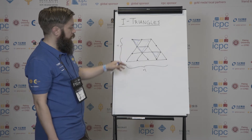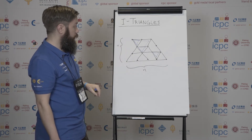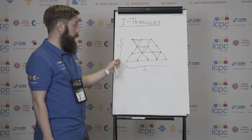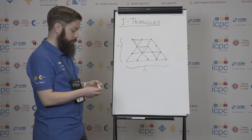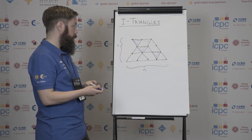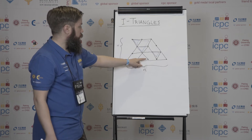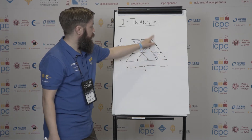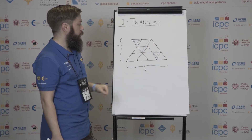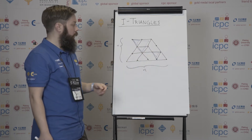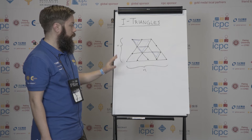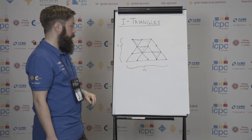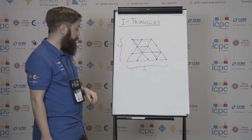Similarly, you can find eight triangles pointing upwards — this one, this one, this big one, and so on and so forth. So in total there are 12 triangles in this picture.